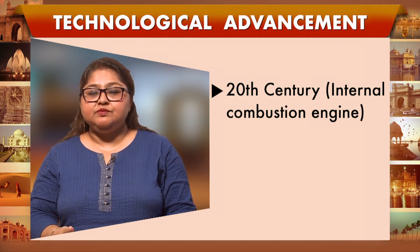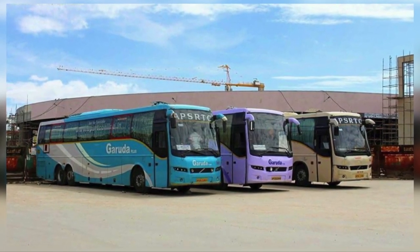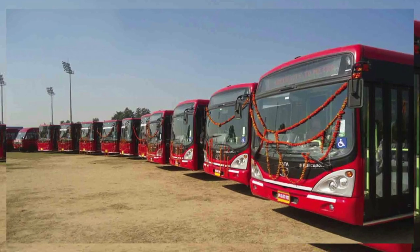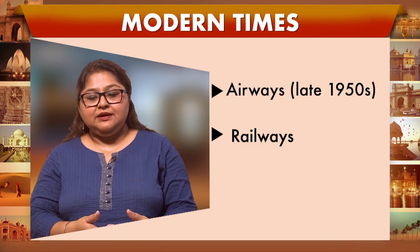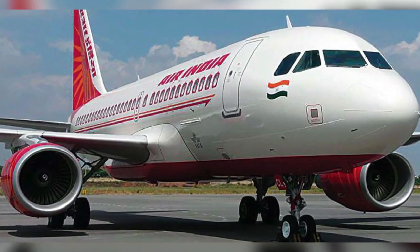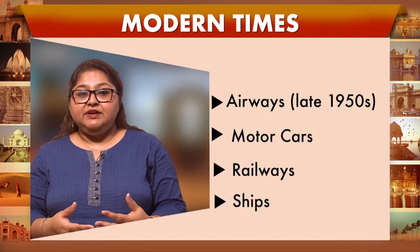The internal combustion engine allowed people to cover a larger area, move faster using land transport, and reach previously unknown lands. In modern times, from the late 1950s, the advent of airlines — which started being used commercially after World War II — allowed tourists to travel across the Atlantic in half the time taken by cruise liners. This effectively reduced the size of the world. We also saw the growth of motor cars, railways, and ships, with railways taking you to hinterlands.